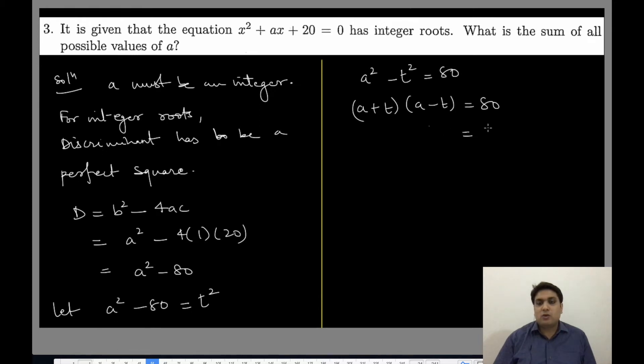If this relation is true, I can form factors. 80×1 can be one factor, then 40×2, then 20×4, then 16×5, then 10×8. These are the factors we can have.